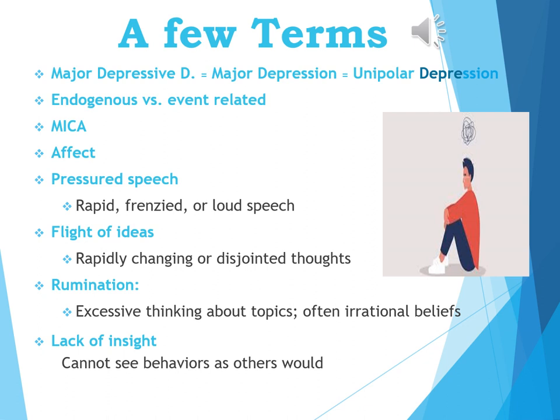The current slide has various terms we should become comfortable with. First, major depression is the same thing as major depressive disorder, and that is the same thing as unipolar depression — make sure you can use these words interchangeably. Endogenous refers to naturally occurring, a depression not caused by an outside event — it's related to the machinery that regulates neurotransmitters. Versus event-related, where the depression is related to an external event, either a chronic long-term stressor or a severe trauma.